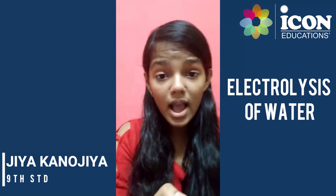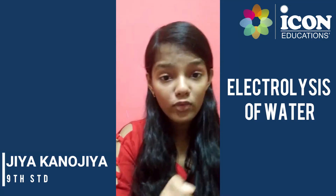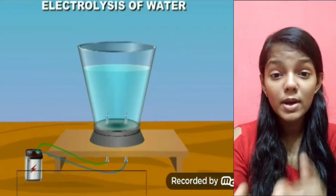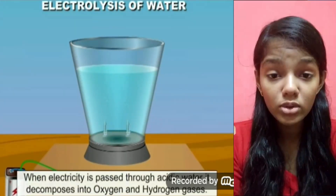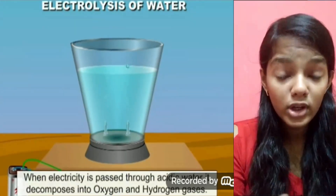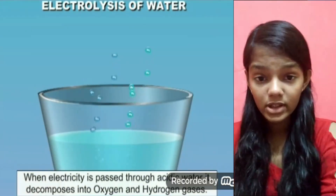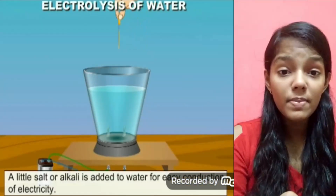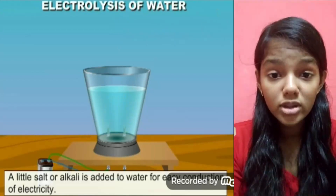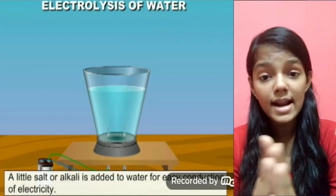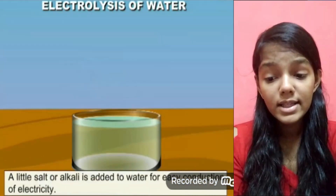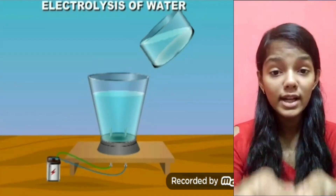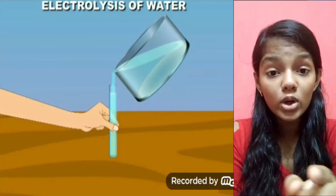In this process, we have a plastic beaker into which we have poured water. We have to add one kind of acid into the water, because water is a bad conductor of electricity as we have learned in previous standards. If we try to pass electricity through pure water, it will not happen. Any type of acid can be added, such as NaCl or H2SO4. After adding that acid, we have to insert the electrodes and connect them to a 6V battery.